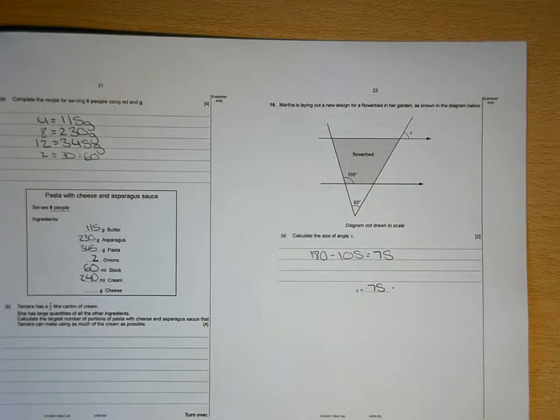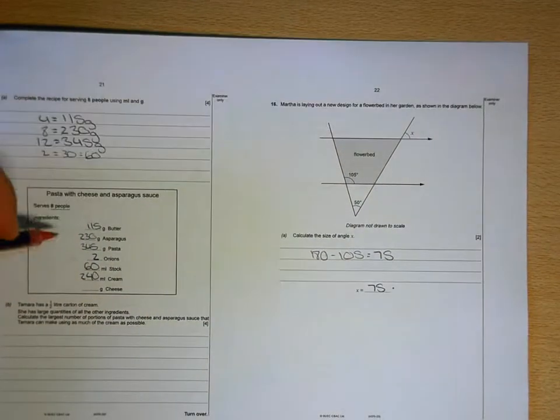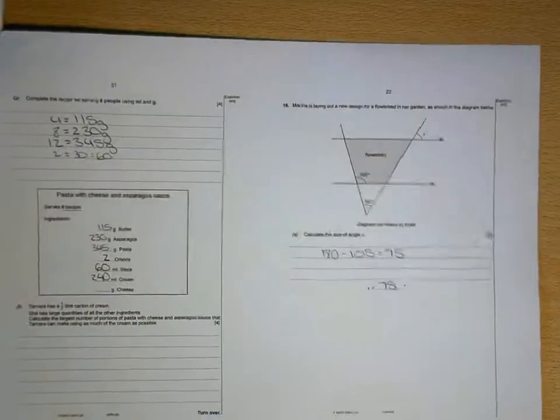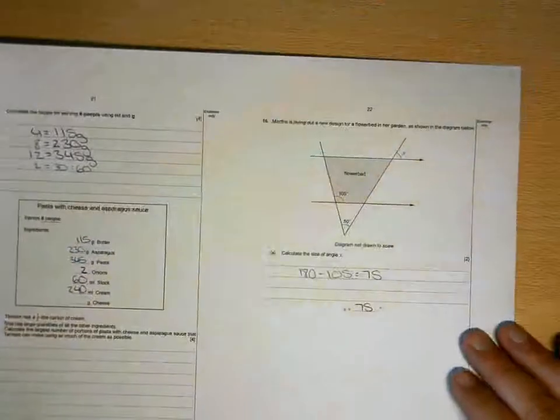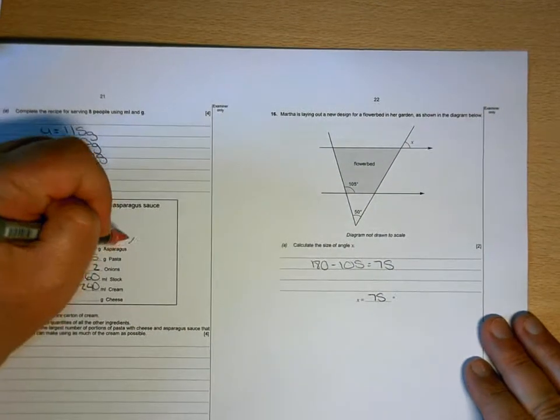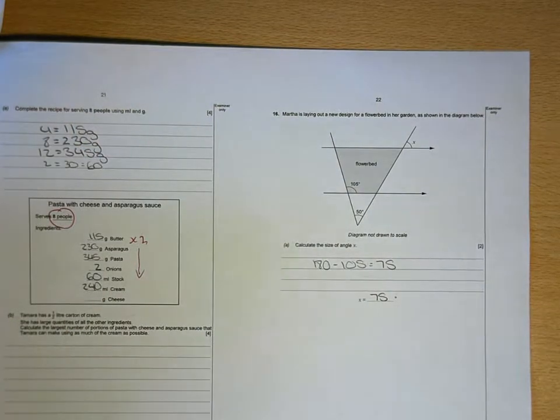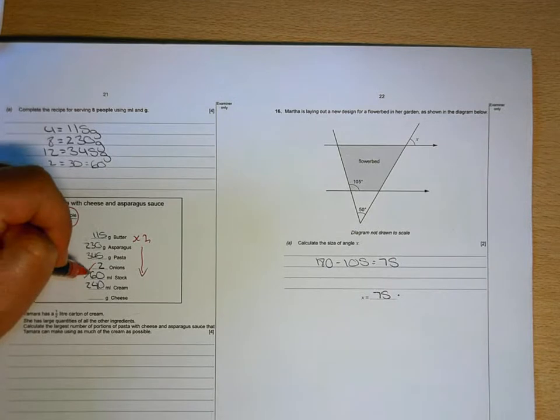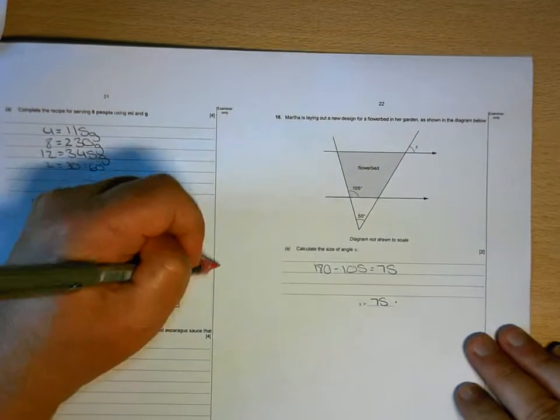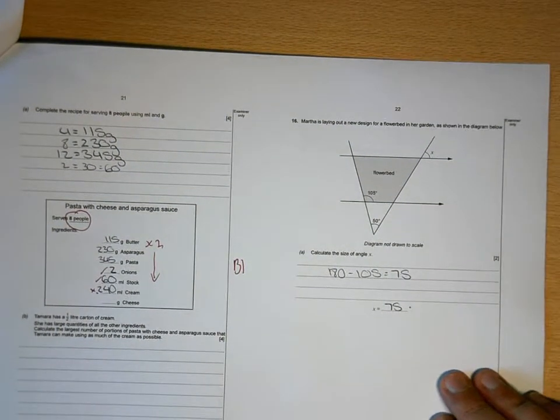Right, what you've done here unfortunately is these are for four people. You've correctly converted those into that recipe, but this recipe is for eight people, so you need to double these quantities. So it should be double that, double that, double that. That's right, that's right, that one's wrong. So there's one mark there. Have a look at the video clip of me going through that and see if it makes sense.